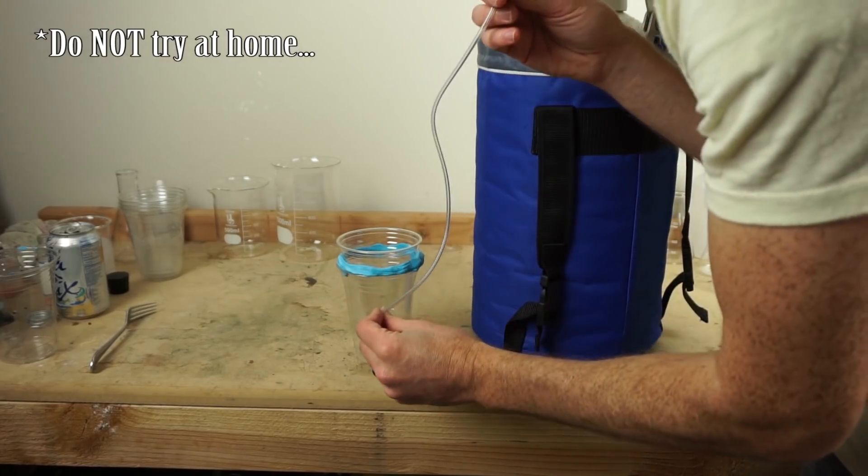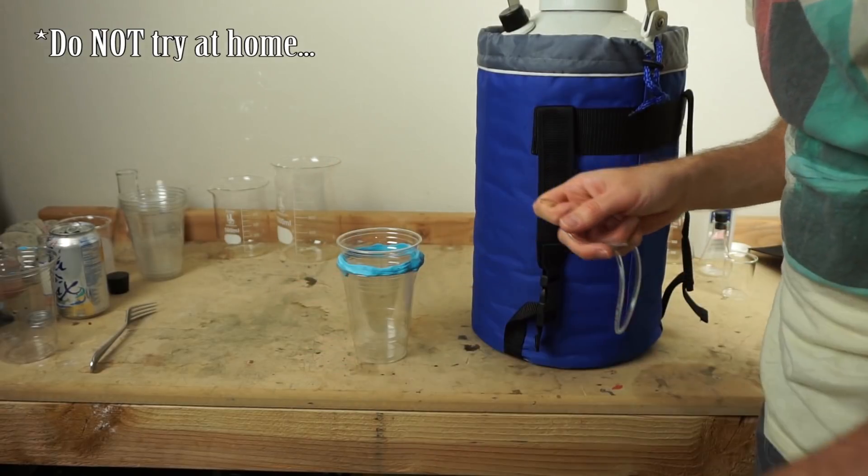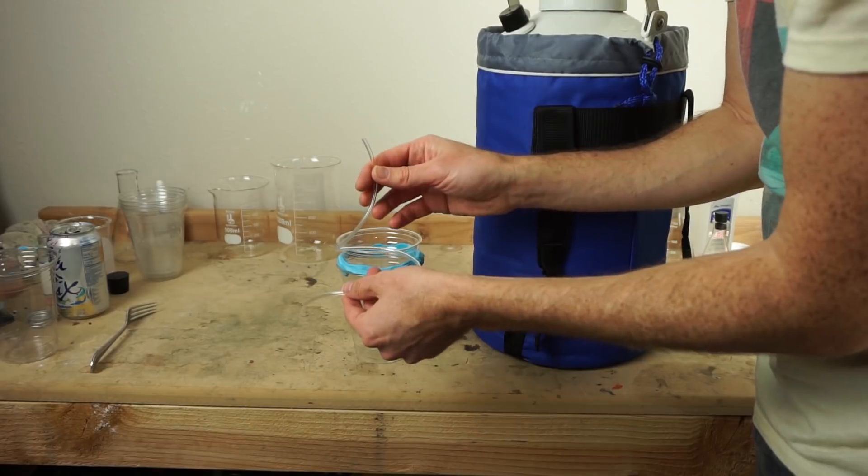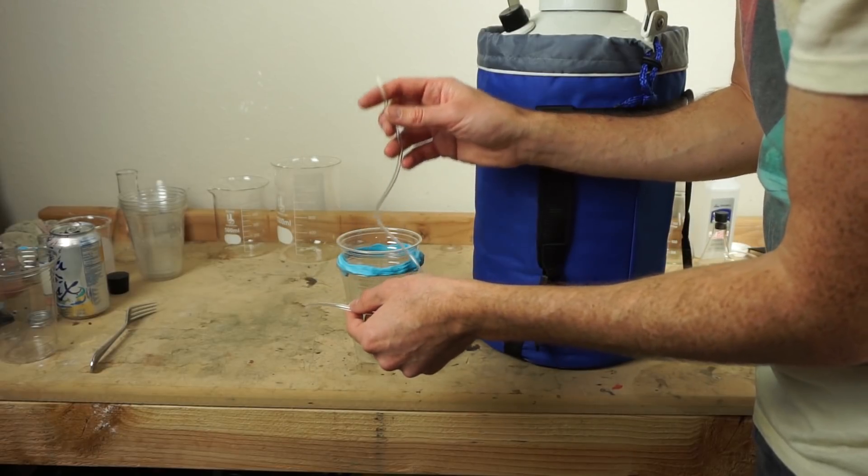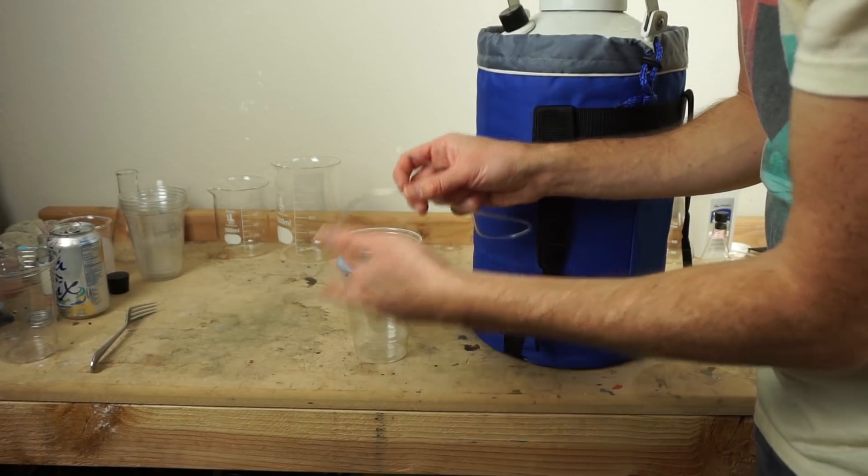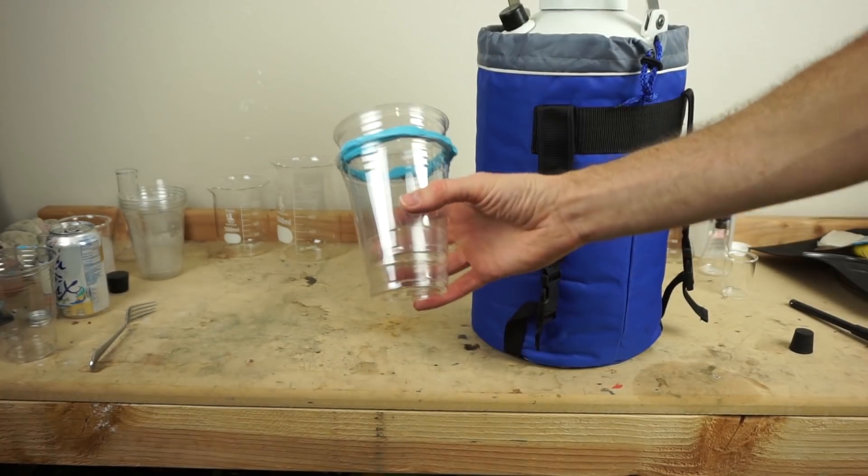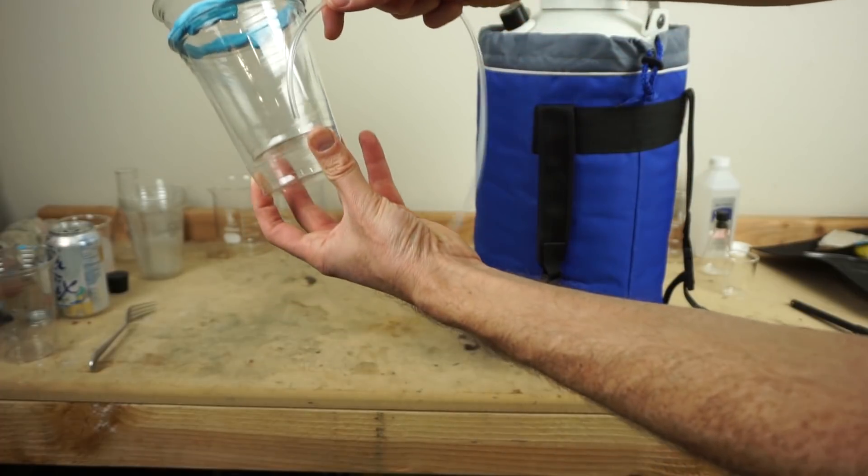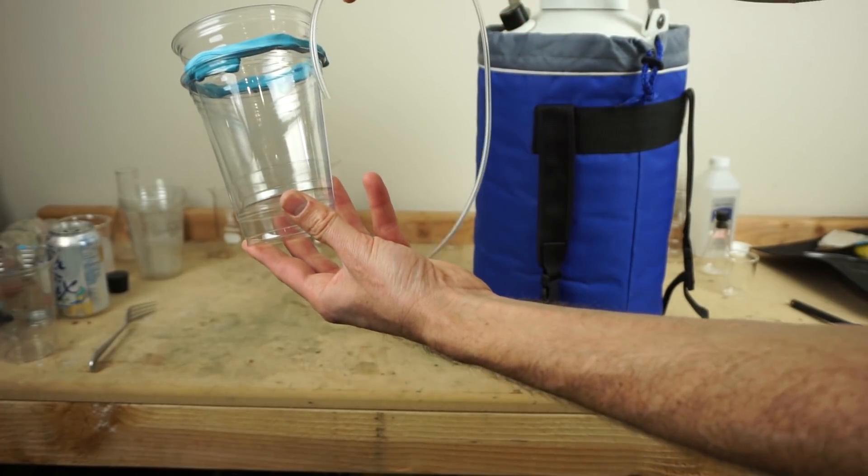So I promised you that whatever I can suck up through this straw I will drink, and I'm not even going to cheat. I'm going to make sure the straw is very cold, the same temperature as the liquid nitrogen, so it won't just heat up when I suck it up and turn into gas. I have here just an insulated clear cup so we can see the liquid nitrogen in there, and I have a clear straw so we can see what's going on inside the straw.